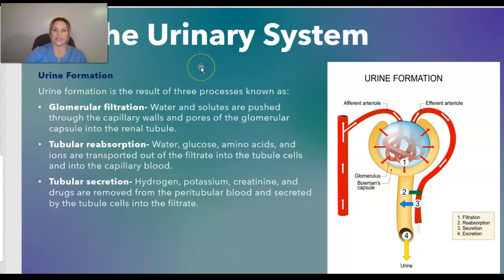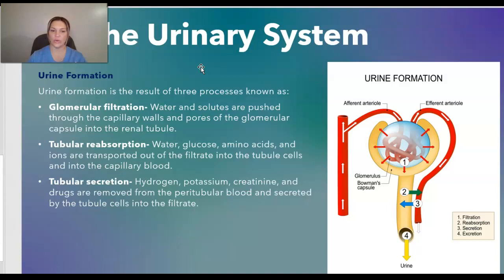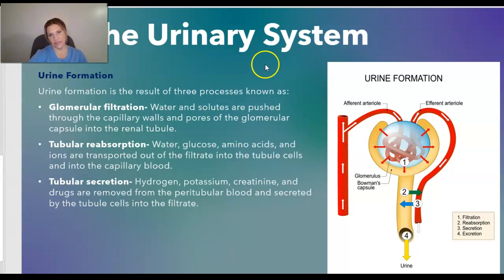Urine formation is the result of three processes. Glomerular filtration: water and solutes are pushed through the capillary walls and pores of the glomerular capsule into the renal tubule. Tubular reabsorption: water, glucose, amino acids, and ions are transported out of the filtrate into the tubule cells and into the capillary blood. Tubular secretion: hydrogen, potassium, creatinine, and drugs are removed from the peritubular blood and secreted by the tubular cells into the filtrate. So the sequence is filtration, reabsorption, secretion, and then excretion.